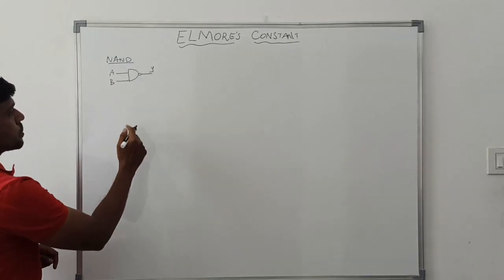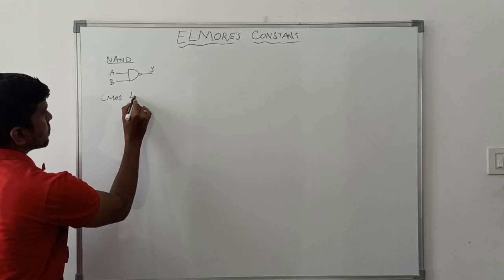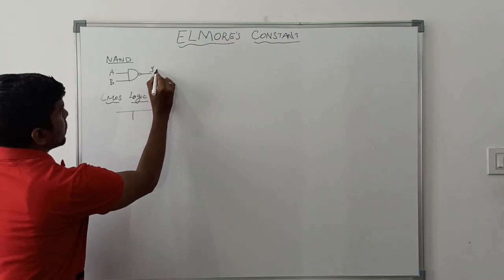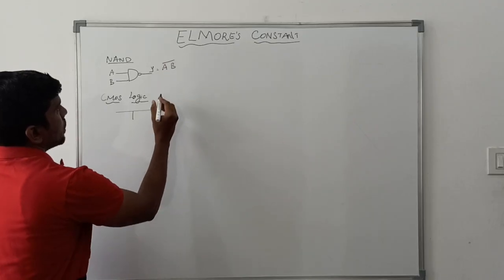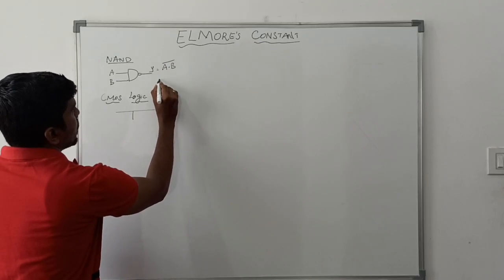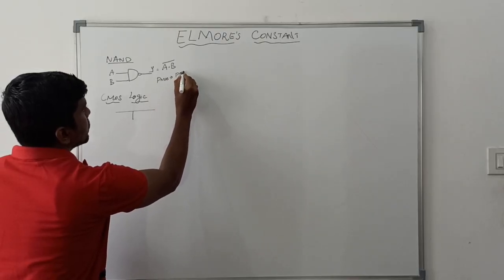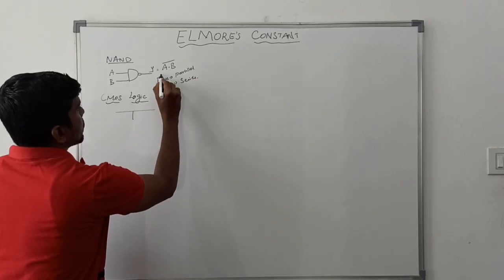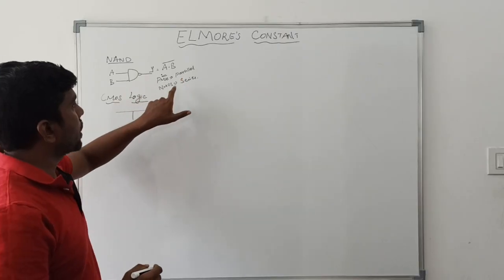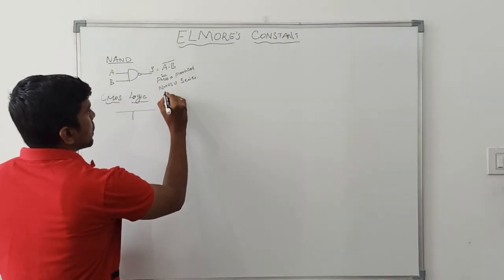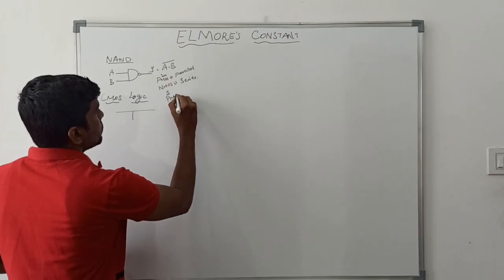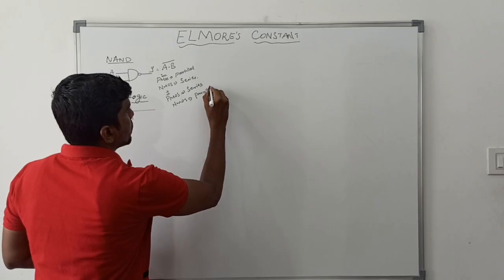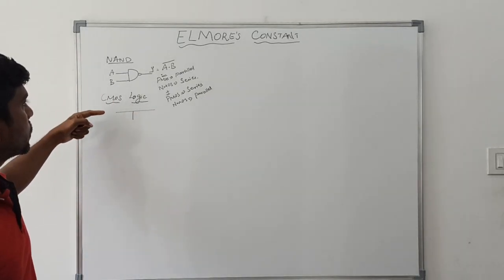Now I will convert this NAND gate into CMOS logic. In CMOS logic, first we check the Boolean expression: A dot B bar. If the dot operator is present in the Boolean expression, PMOS transistors connect in parallel and NMOS transistors connect in series. If the plus operator is present, PMOS connects in series and NMOS connects in parallel. This is the basic rule to convert a logical expression into CMOS logic.